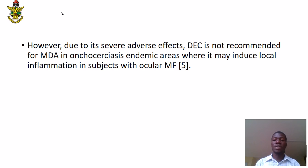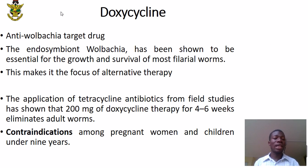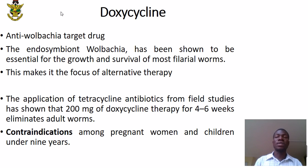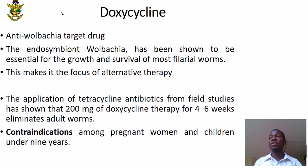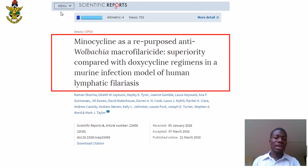The next drug is doxycycline, which is an anti-Wolbachia agent. Anti-Wolbachia therapy has been shown to be essential because Wolbachia is essential for the growth and survival of most filarial worms, making it a focus of alternative therapy. Doxycycline has been demonstrated through field studies to be effective against adult worms and results in their elimination. However, there are contraindications among pregnant women and children under 9 years. A study by Sharma and Taylor has recently shown that minocycline has a superior effect compared to doxycycline in murine studies.